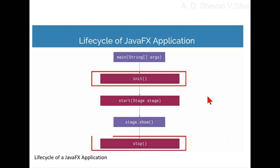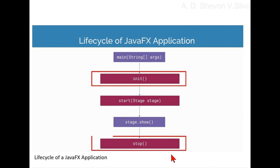In the diagram, the main(String[] args) method is connected to the init method. The init method is connected to the start(Stage stage) method. The start method is connected to the stage.show() method. The stage.show() method is then connected to the stop method.